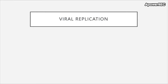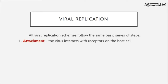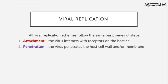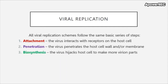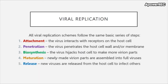Now we are ready to discuss viral replication. The mechanisms viruses use to replicate are important because these processes and their consequences lead to a diseased state. All viral replication schemes follow the same basic series of steps: first, attachment, where the virus interacts with receptors on the host cell; next, penetration, where the virus penetrates the host cell wall and/or membrane; third, biosynthesis, where the virus hijacks host cells to make more virion parts; fourth, maturation, where newly made virion parts are assembled; and finally, release, where new viruses are released to infect others.